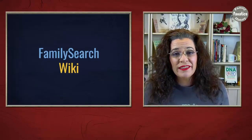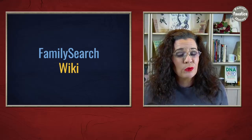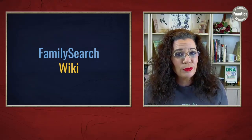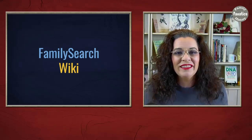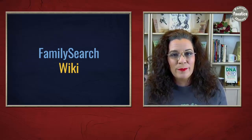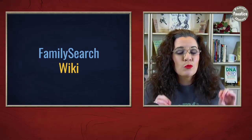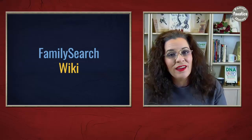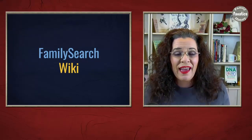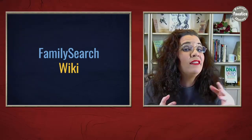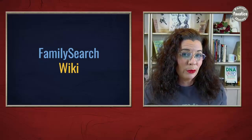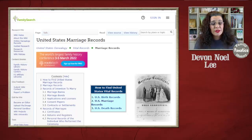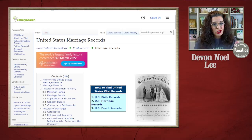One of the first places I go whenever I'm trying to do genealogical research of any kind is the FamilySearch wiki. It is a great portal page. I'll show you some places you're going to want to access, and then I'll show you another portal page that I love. One of the reasons I like the FamilySearch wiki is that it gives me information as well as link points.